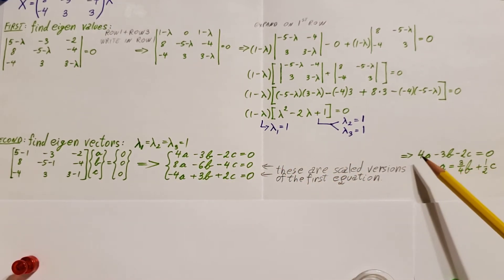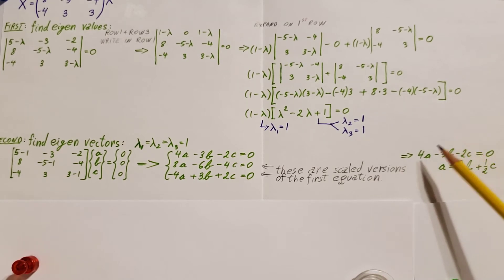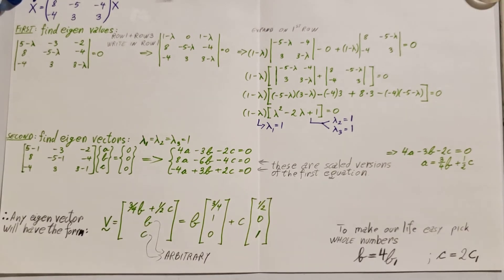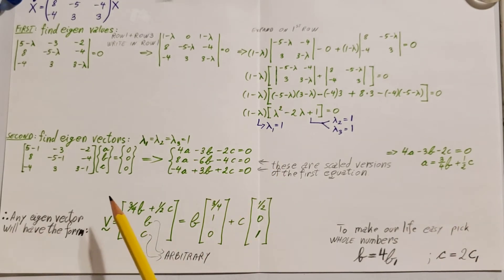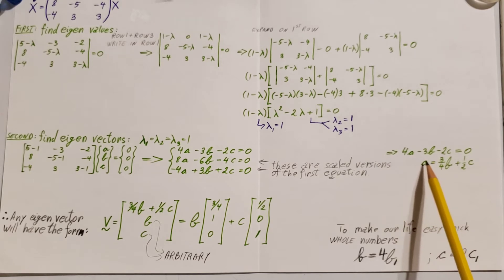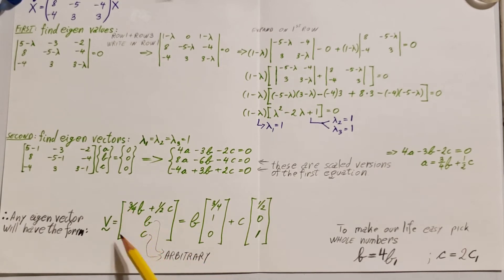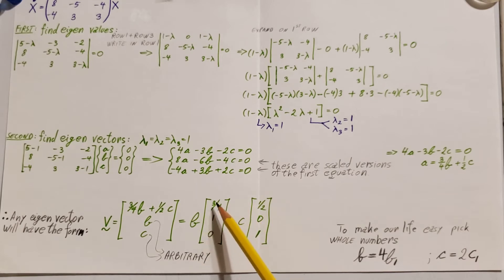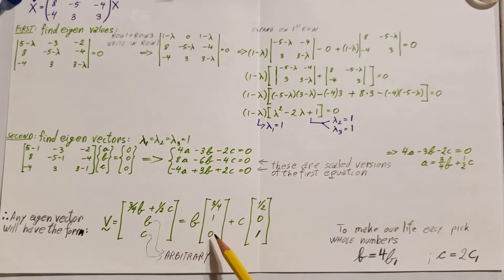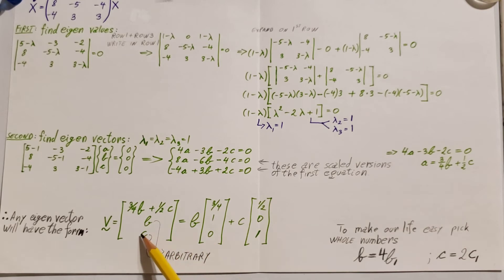I'm going to rewrite it: 4A minus 3B minus 2C equals zero, and from here I'm going to solve for 4A. After this, we know that any eigenvector for this setup will have the form of this vector V, where A, B and C are arbitrary, so I just put B and C. We can also write this by factoring B and C out. B appears as 3/4 in the first component, once in the second, and not at all in the third — so zero. Same thing for C: it appears as 1/2 in the first, doesn't appear in the second, so zero.